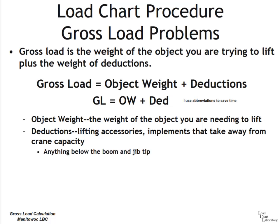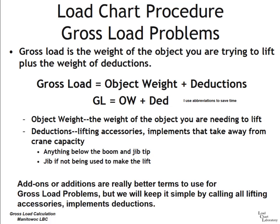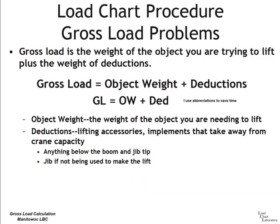Deductions include anything below the boom and jib tip sheave — basically anything below the boom and jib tip will add to the weight of the load. Also, if the jib is not being used to make the lift, it is also a deduction. This is a common mistake: if you're making the lift from the jib, you do not deduct the jib. Only deduct the jib if it's erected and not being used to make the lift.